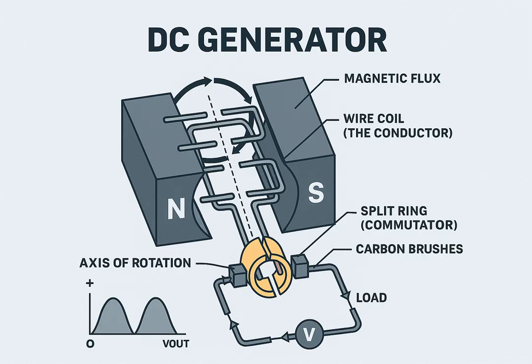A brushed DC motor may look simple from the outside, but inside, it's a carefully designed system of components that work together to convert electrical energy into continuous rotational motion. Let's break down the essential parts and their functions.